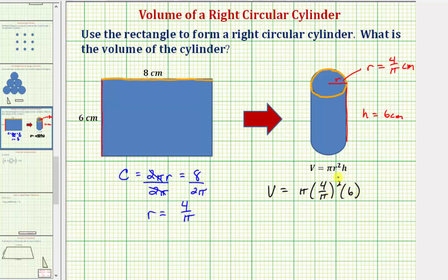Let's go ahead and square four over π. So the volume V is equal to π times four over π squared would be sixteen over π squared times six.